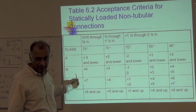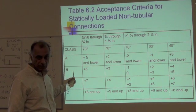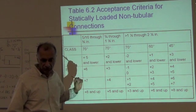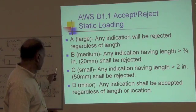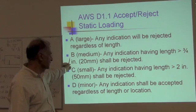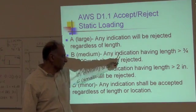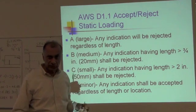Now we have to go to the next slide to find out if class B is acceptable or rejectable. In the next slide, indication class B is a medium indication, which means that any indication having a size that exceeds 3/4 of an inch shall be rejected.